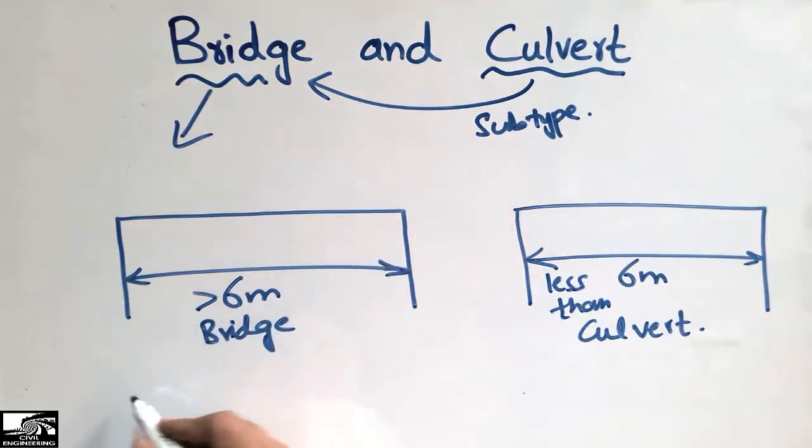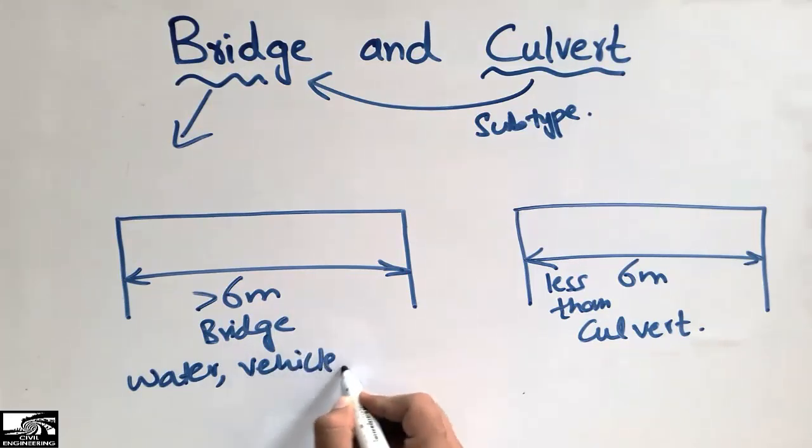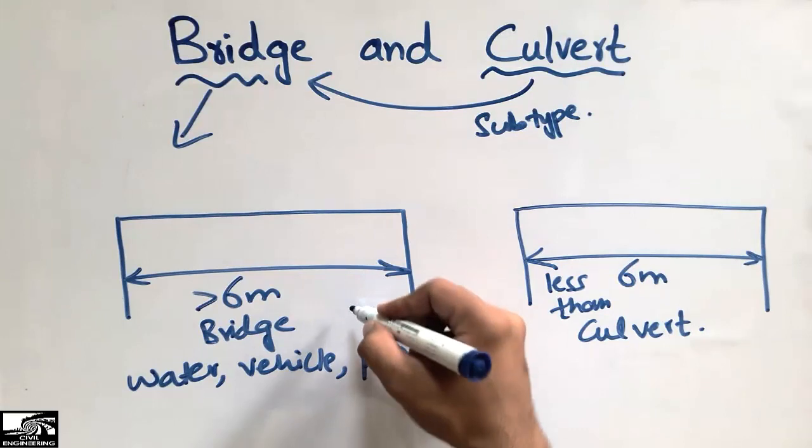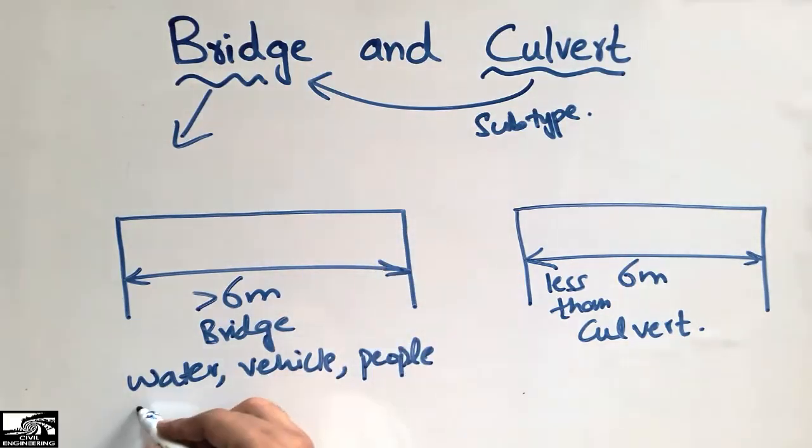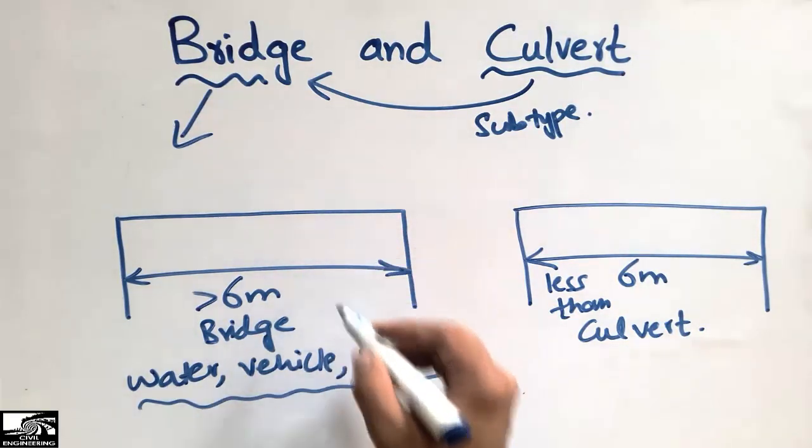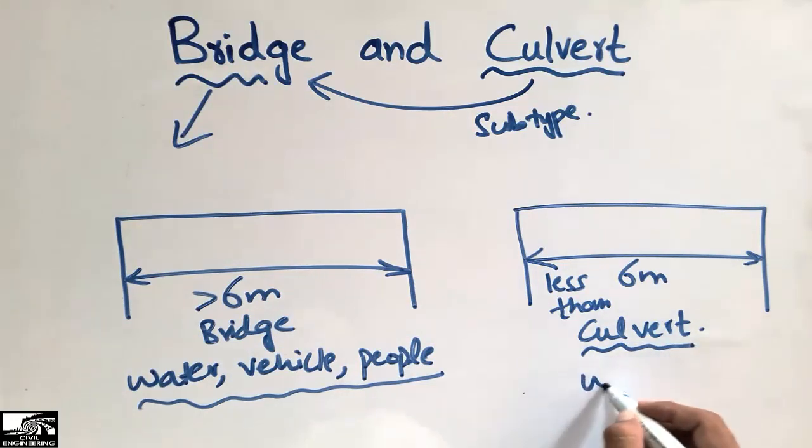The bridge allows the water, the vehicles, and the people to move under the bridge. These types of things can move under the bridge. While in the case of the culvert, it is designed only for the water.